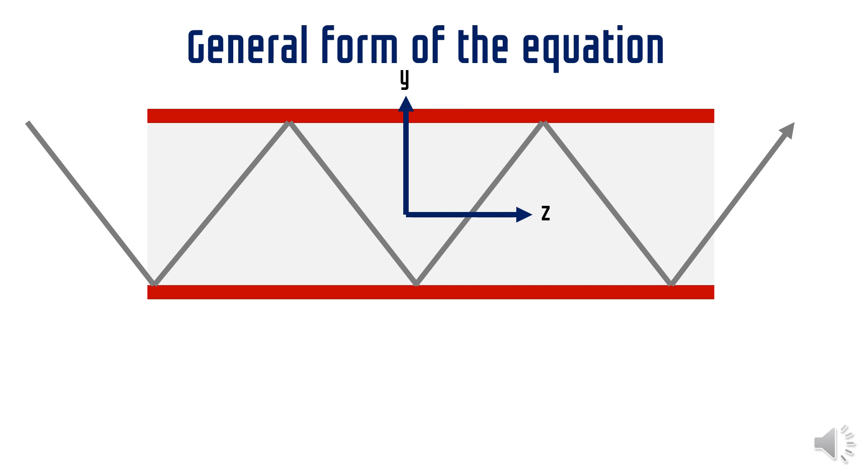Please note that this has been done for the sake of convenience and the direction of propagation could have been taken along x-axis or along any linear combination of x and z. Looking at the wave as in the figure, we can see that there should be a propagating term along z-axis. Also since there is a continuous reflection along the y-axis, there should be a standing wave term in the y-direction with no real propagation.